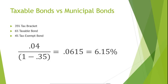Therefore, a taxable bond that yields 6.15% would be equivalent to a tax-exempt bond that yields 4% for a person in a 35% tax bracket. For a taxable bond to be a better investment than a tax-exempt bond, it must offer a before-tax yield of at least 6.15%.